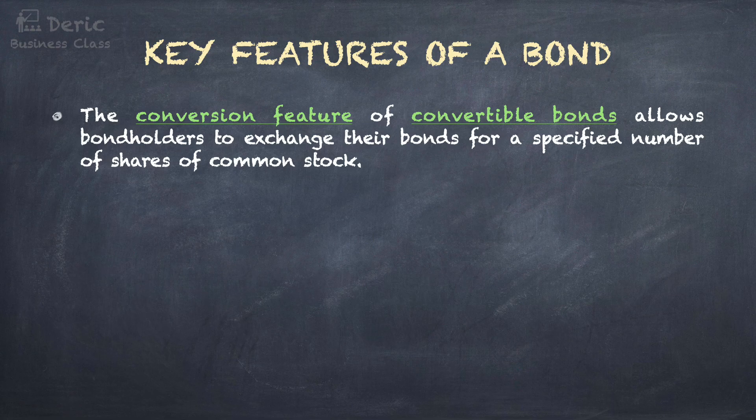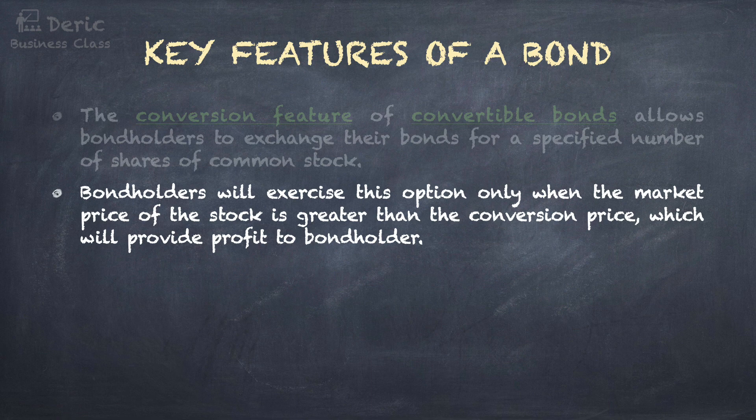Certain bonds also come with a conversion feature, in which convertible bonds allow bondholders to exchange their bonds for a specified number of shares of common stock. Bondholders will exercise this option only when the market price of the stock is greater than the conversion price, which will provide profit to the bondholder.